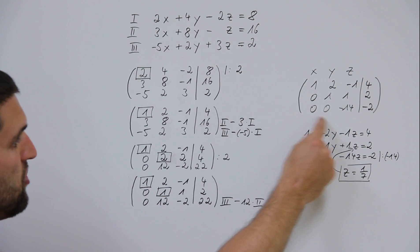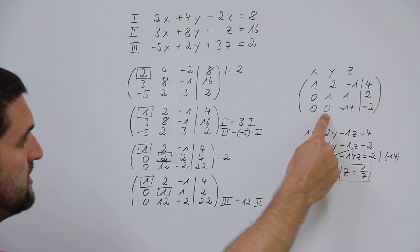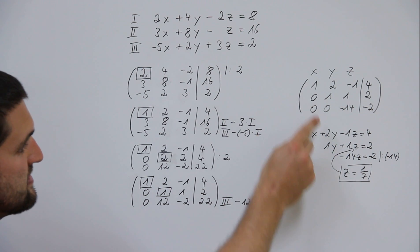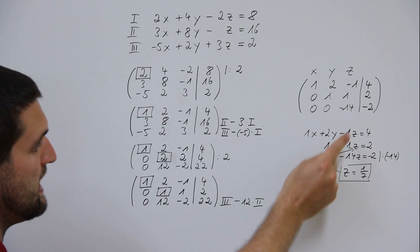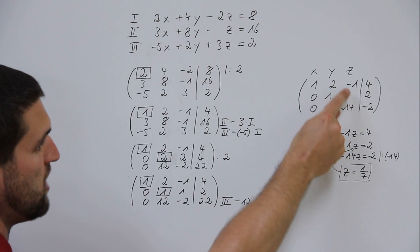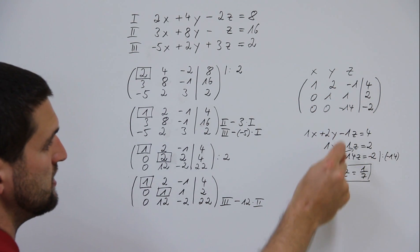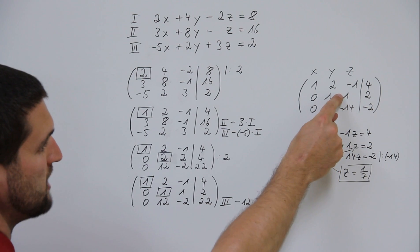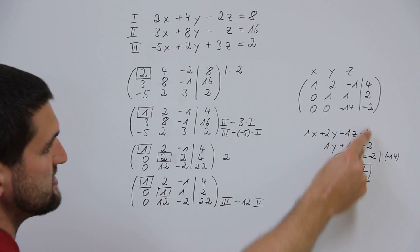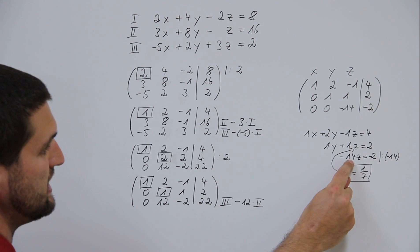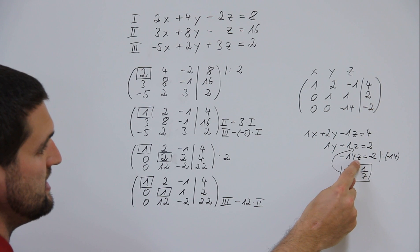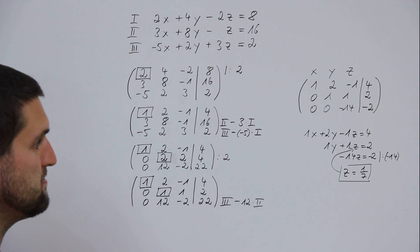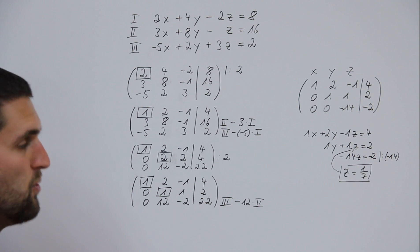Write it down like this in the corner: one x plus two y minus one z equals four; one y plus one z equals two; minus fourteen z equals minus two. The rest is simple from here.